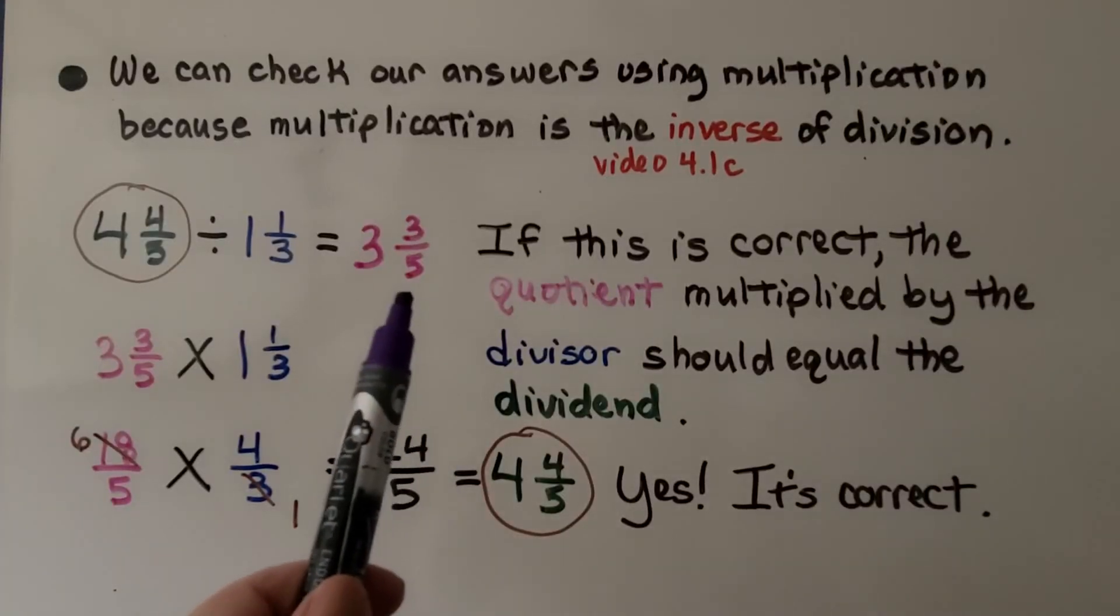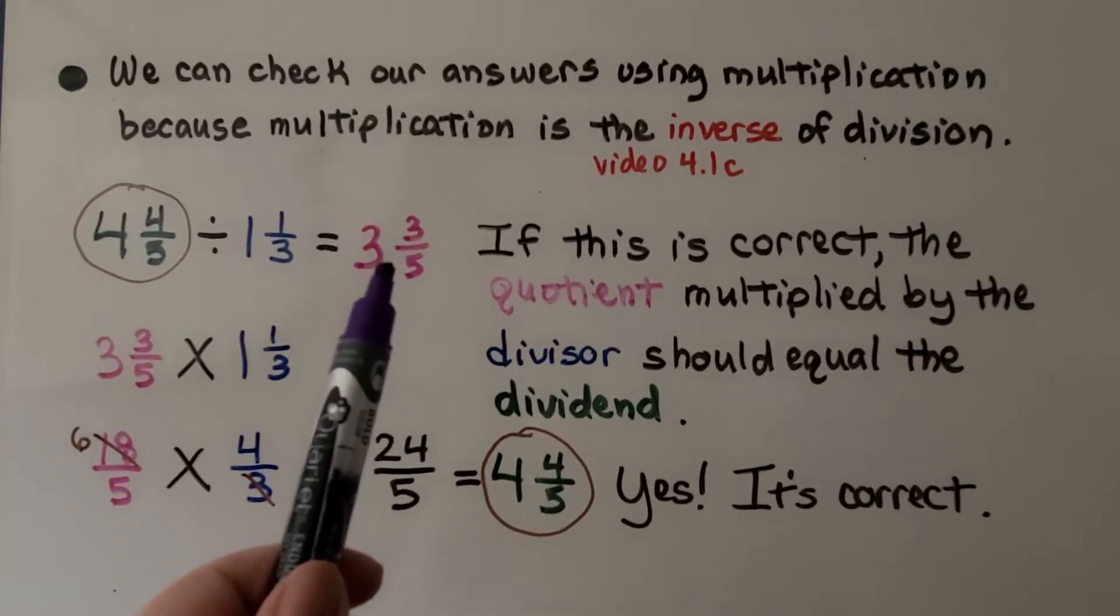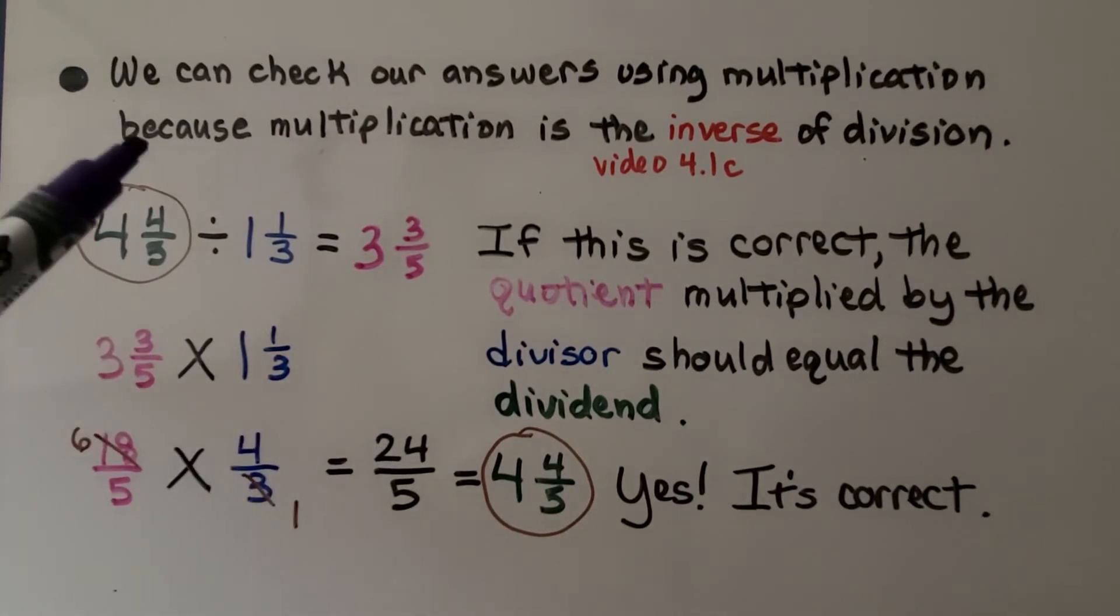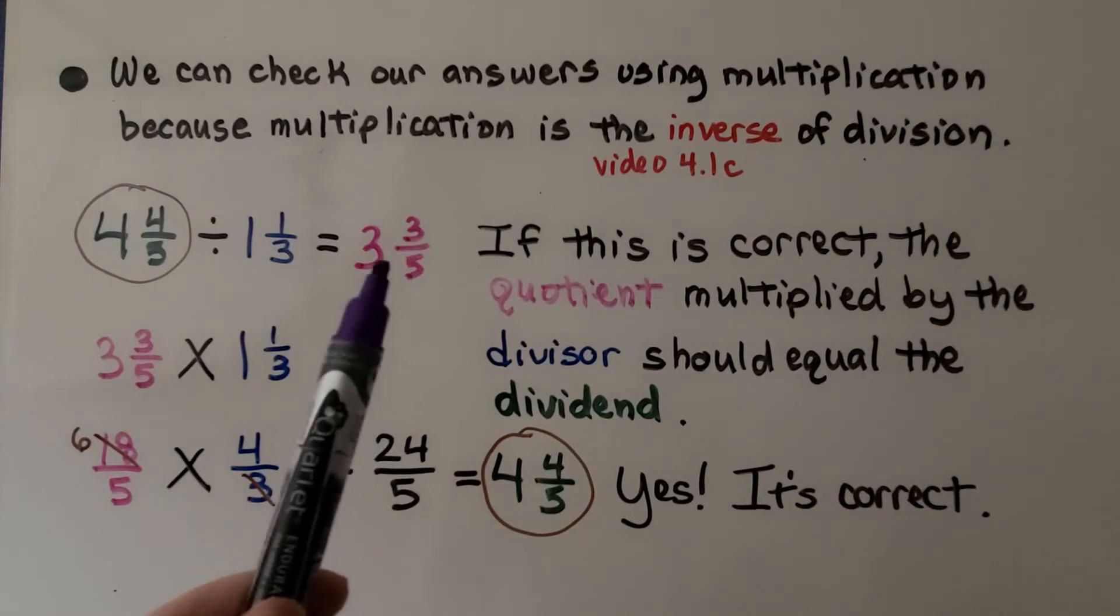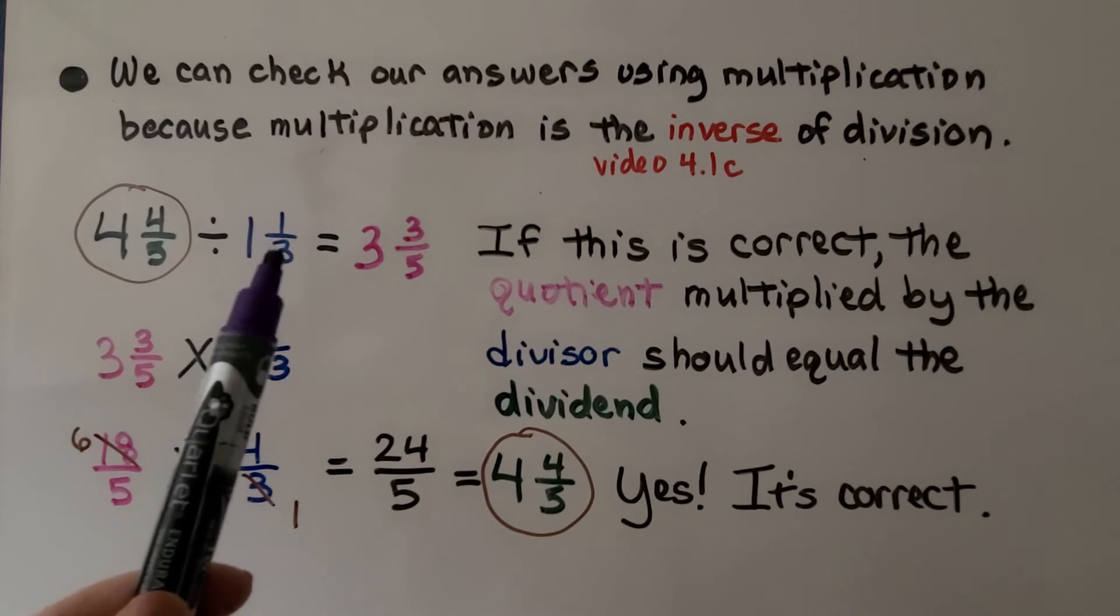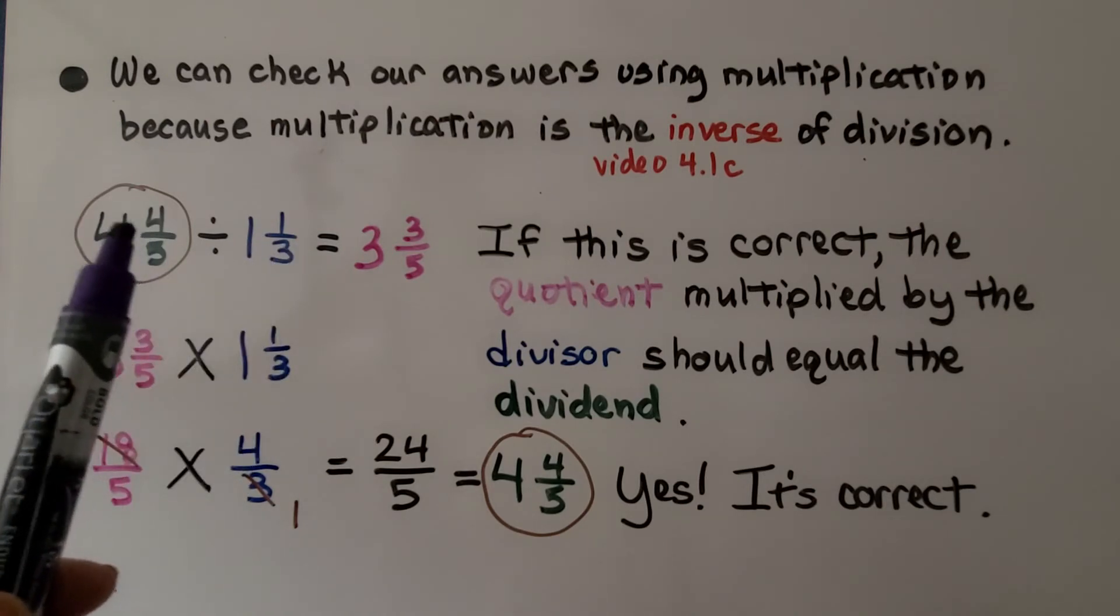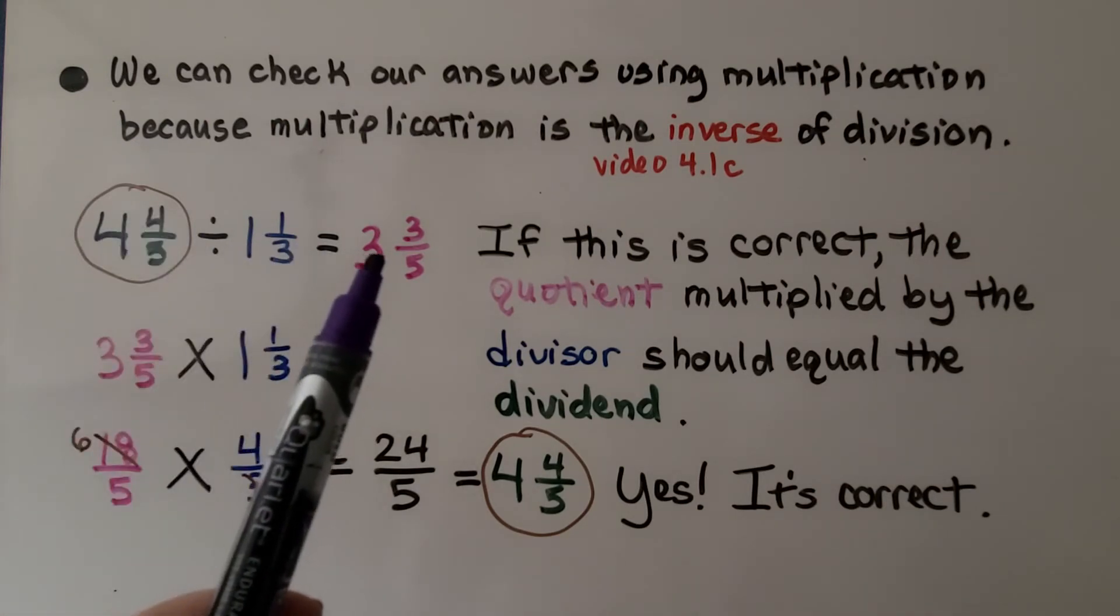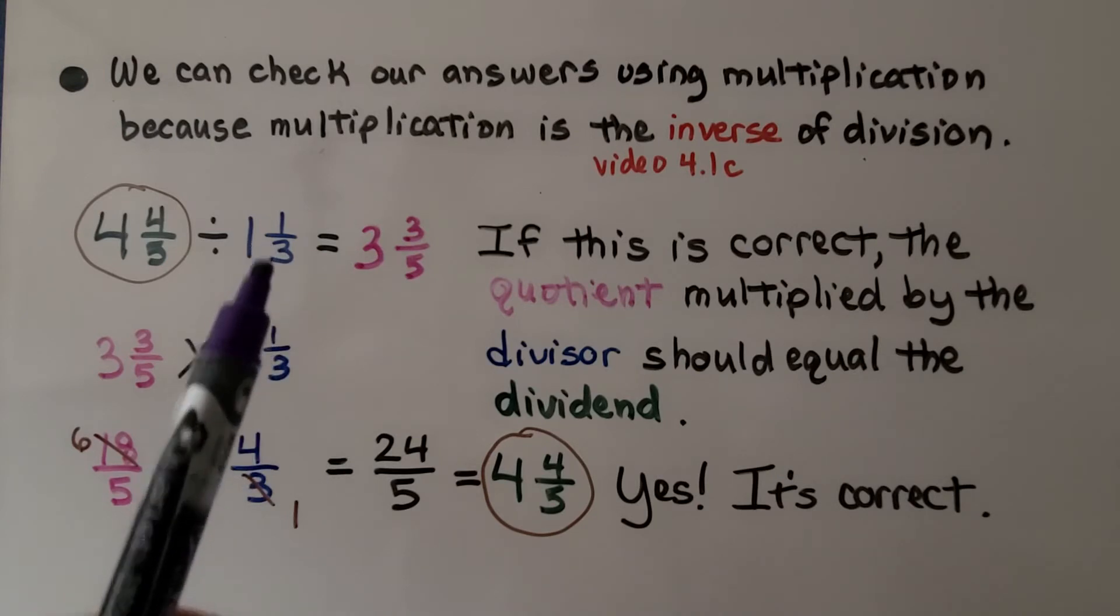Now our quotient was 3⅗. We can check our answers using multiplication, because multiplication is the inverse of division. If this is correct, the quotient multiplied by the divisor should equal the dividend. We do 3⅗ times 1⅓.